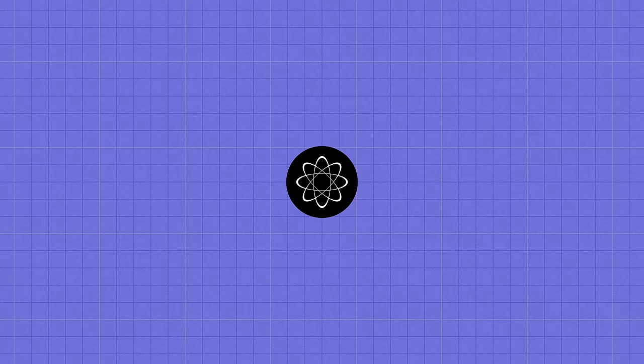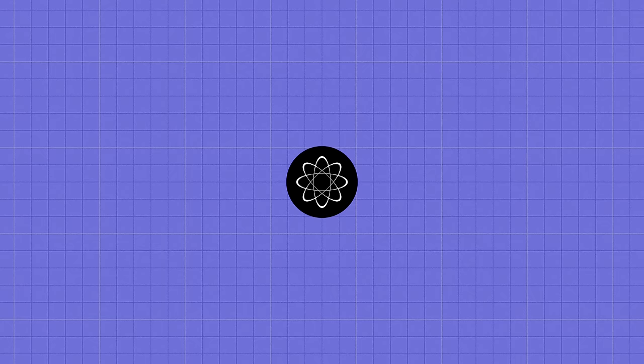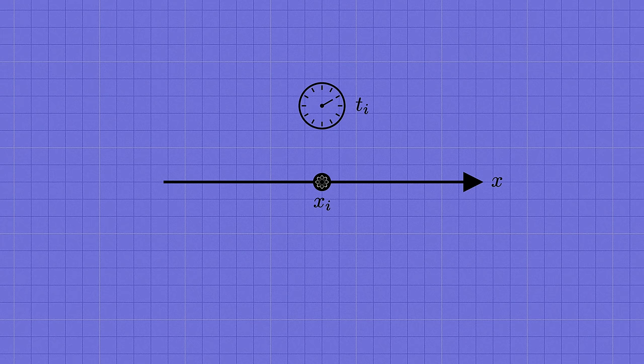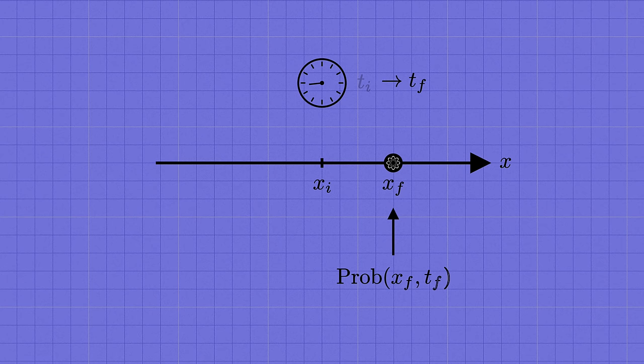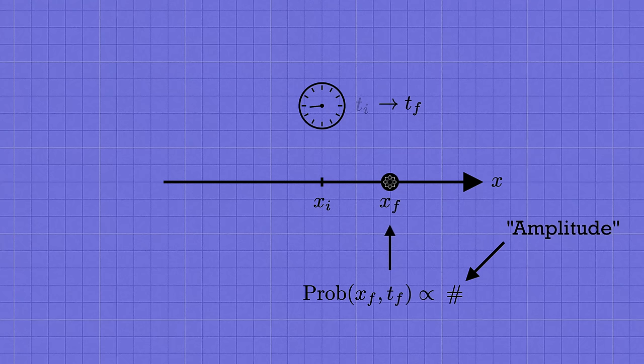What we're interested in here is the probability for a quantum particle that started at position xi at time ti to be found at position xf at a later time tf. Generally speaking, to find a probability in quantum mechanics, we start by writing down a complex number called an amplitude, and then we take the absolute value of the amplitude and square it to obtain the actual probability.